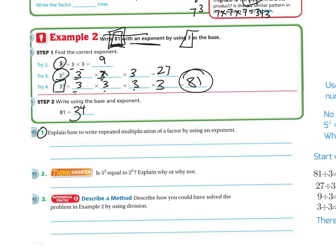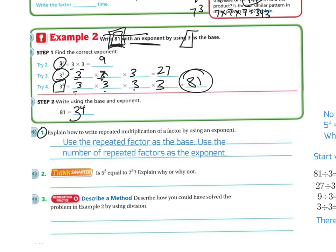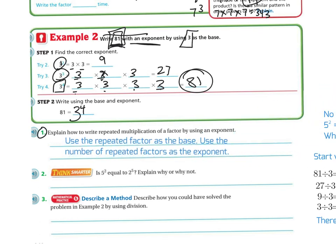Question 1: Explain how to write repeated multiplication of a factor using exponents. You use the repeated factor as the base, and then use the number of repeated factors as the exponent, just like we did above.